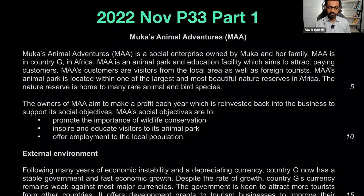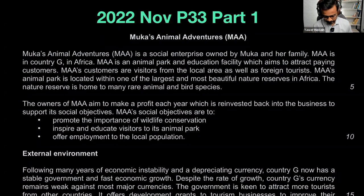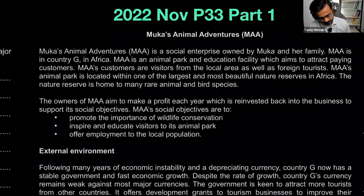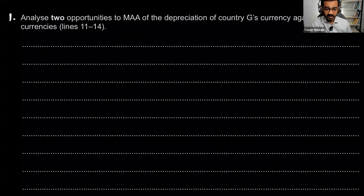When it comes to paper three, it's always a good idea with any case study to look at the questions briefly first. Don't look to answer the questions — just look at what the main topics are that you'll be tested on, so that when you read the entire case study, you know exactly where all the content is. The first question is about exchange rate depreciation of currency — unit one, external environment.